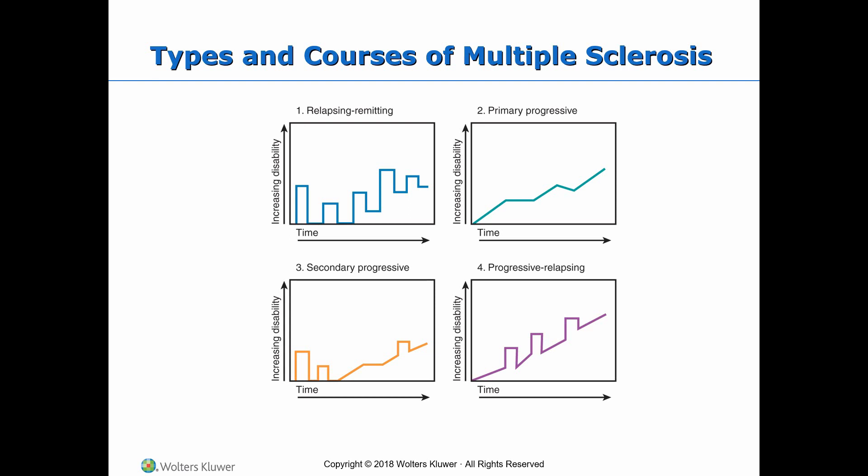Secondary progressive MS begins with an initial relapsing-remitting course, followed by progression at a variable rate, which may also include occasional relapses and minor remissions. Progressive relapsing MS shows progression from onset, but with clear acute relapses with or without recovery.